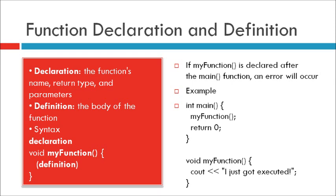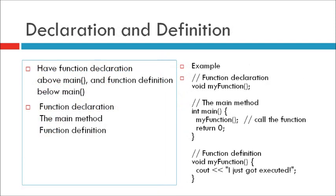For example: int main() { myFunction(); return 0; } void myFunction() { cout << "I just got executed"; }. Here myFunction is declared after the main function, so when we execute the program, an error will occur. However, it is possible to separate the declaration and definition of the function for code optimization. You will often see C++ programs that have the function declaration above main and the function definition below main. This will make the code better organized and easier to read.